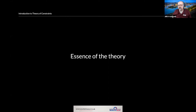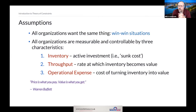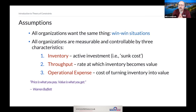Let's talk about the Theory of Constraints itself. Every theory has axioms — assumptions that must be accepted as true for the theory to hold. The first axiom is that all organizations want the same thing: we presume good intent, that everyone in the organization, their customers, and their value chain wants to be successful. There is no sabotage or intrigue — everybody wants to win.